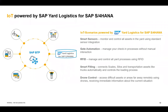Regarding IoT enablement: yard logistics supports sensor-based device integration and geofencing scenarios. These scenarios are predefined in the solution, and during the implementation project you bind devices via your middleware to SAP Yard Logistics. The device data is transferred from external sources to yard logistics, which then drives all processes and activities.